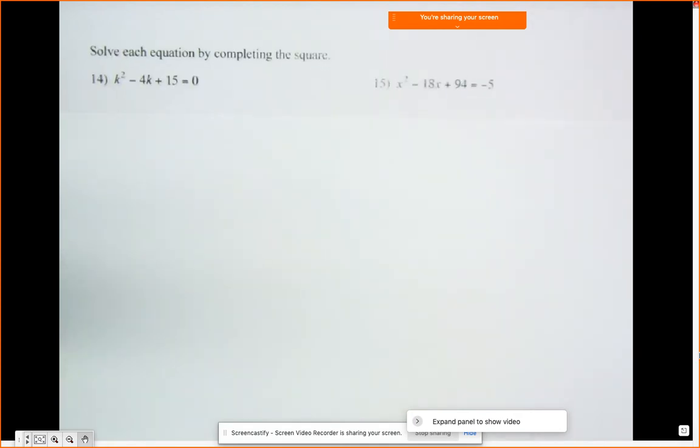Okay, so now we've already completed the square, but now we have to deal with there being a negative under the square root.